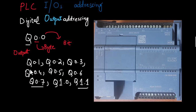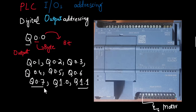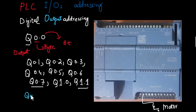This is how we address the digital output channels. For example, if we connect a relay coil — such as the relay of a motor — to the first digital output channel, then in our logic we will refer to the motor command as Q0.0.